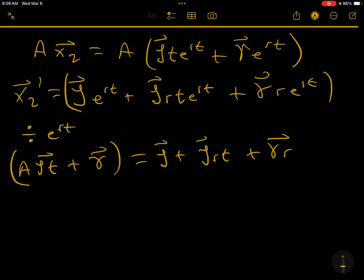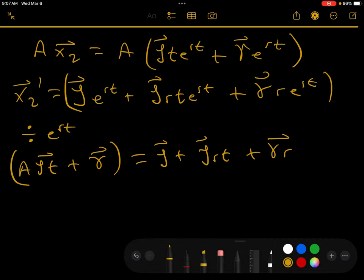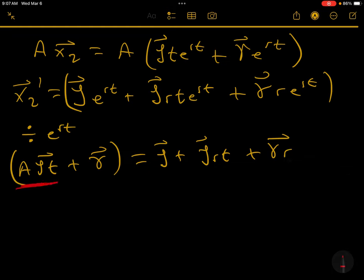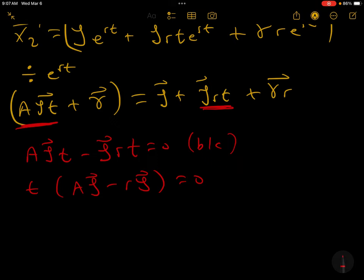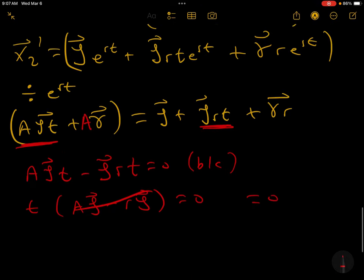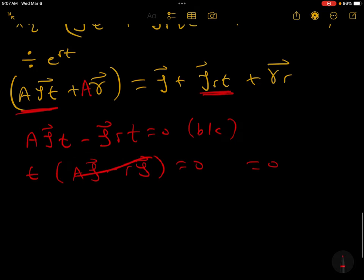This might be hard to see, but A zeta t minus zeta rt equals zero. If you factor the t out, you get A zeta minus r zeta, and that equals zero since r and zeta are the eigenvalue and eigenvector corresponding to A. So these drop out.